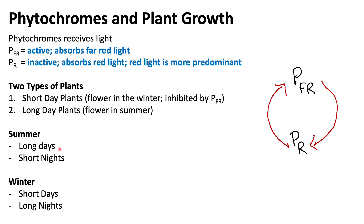To understand the effects of Pfr on flowering, we need to know that in summer we have longer days and shorter nights, whereas in winter we have shorter days and longer nights. Long days mean lots of sunlight, which means lots of red light, which means phytochrome red is actively absorbing red light and being converted into phytochrome far red, causing a buildup of Pfr.